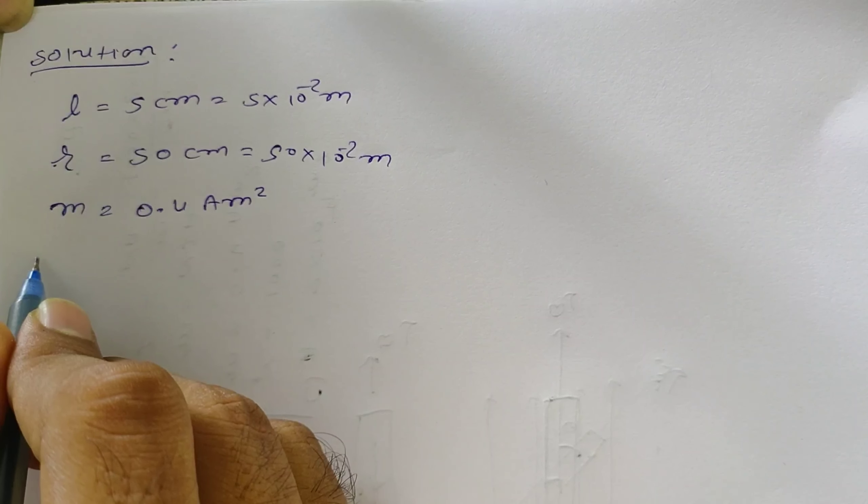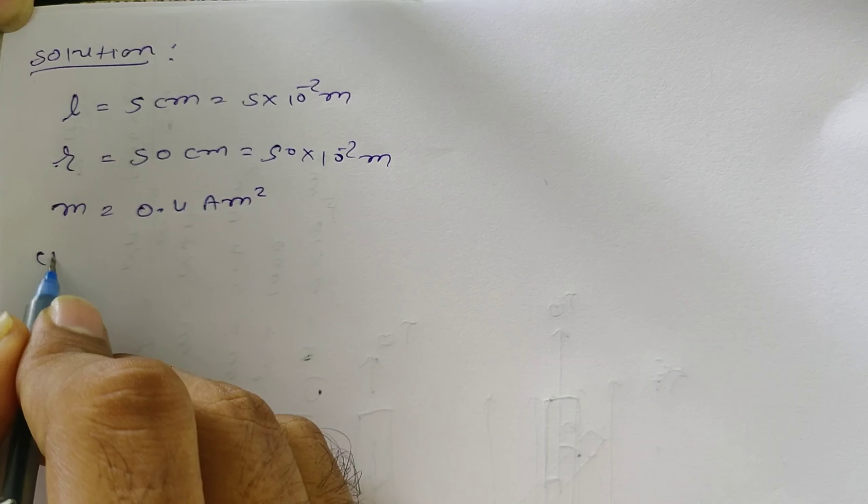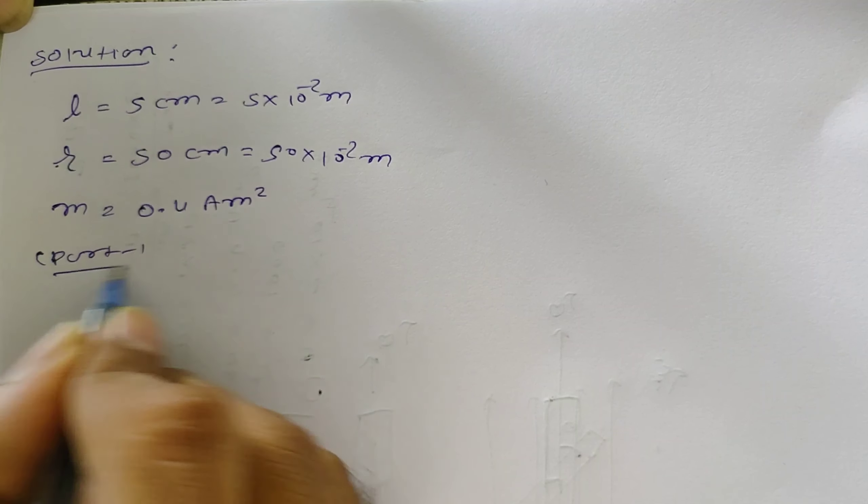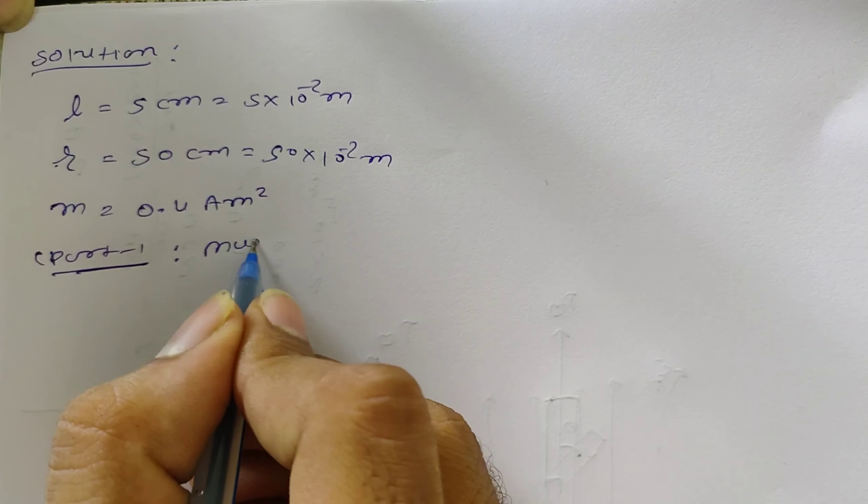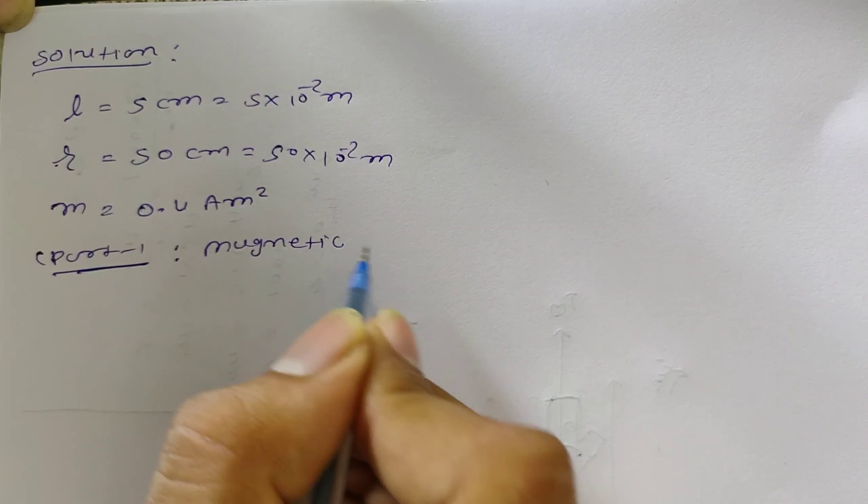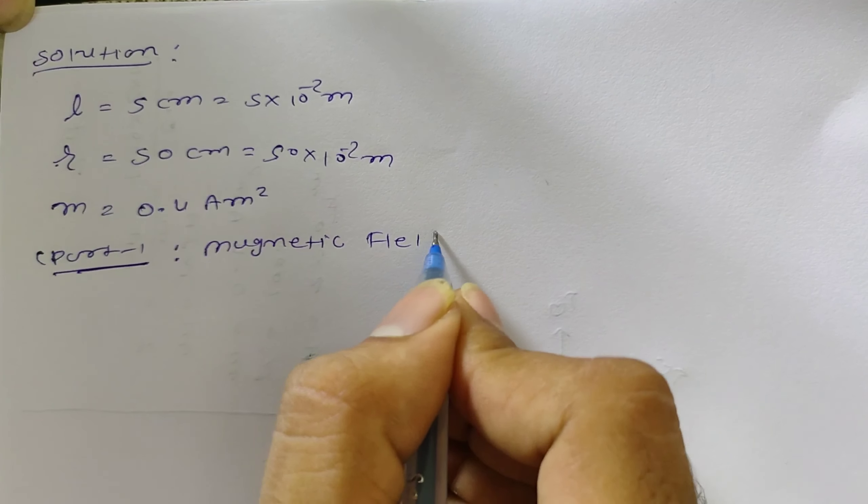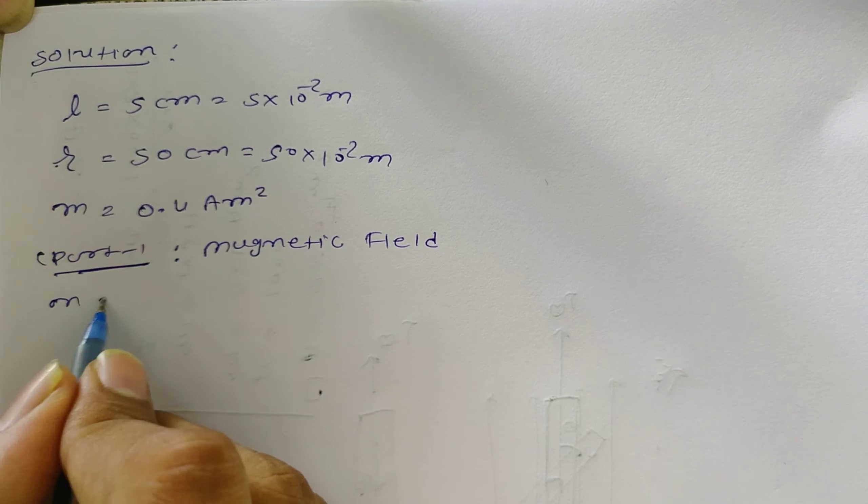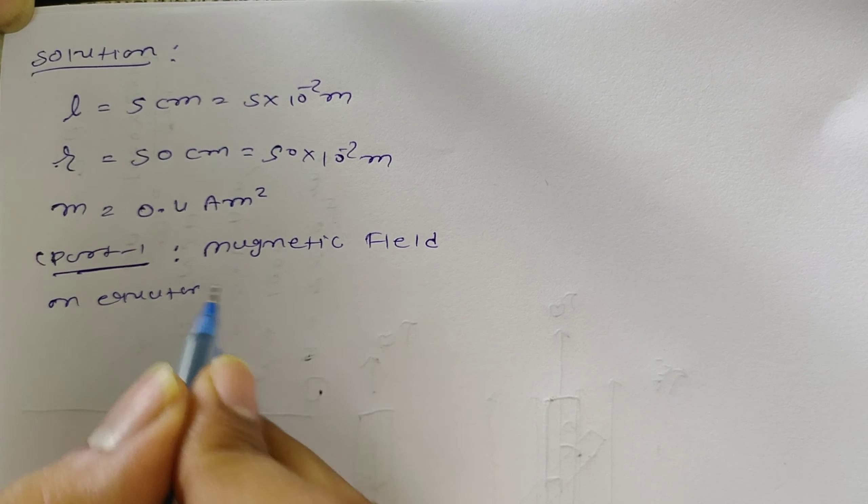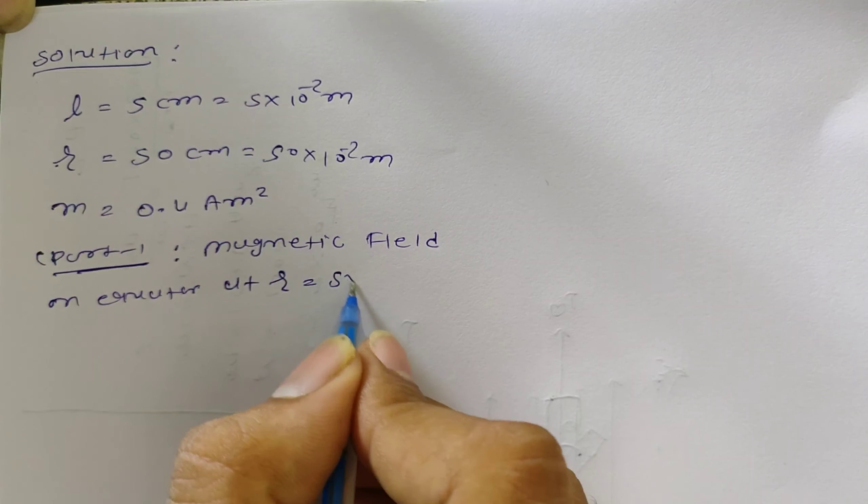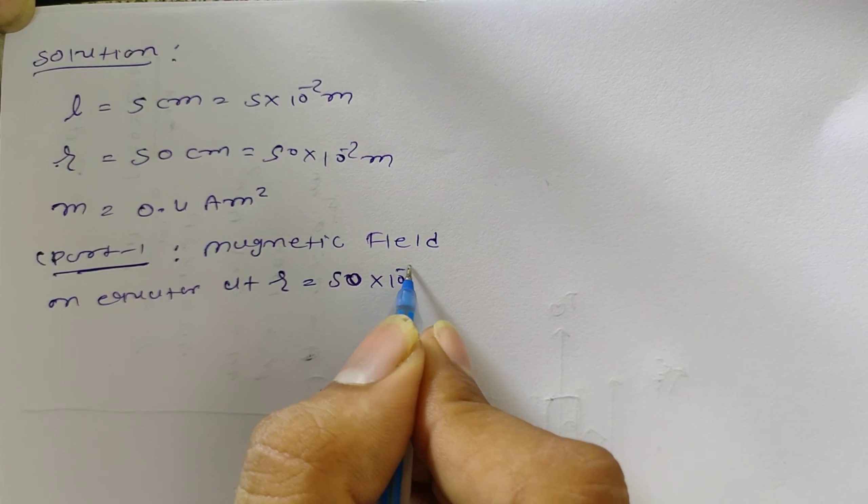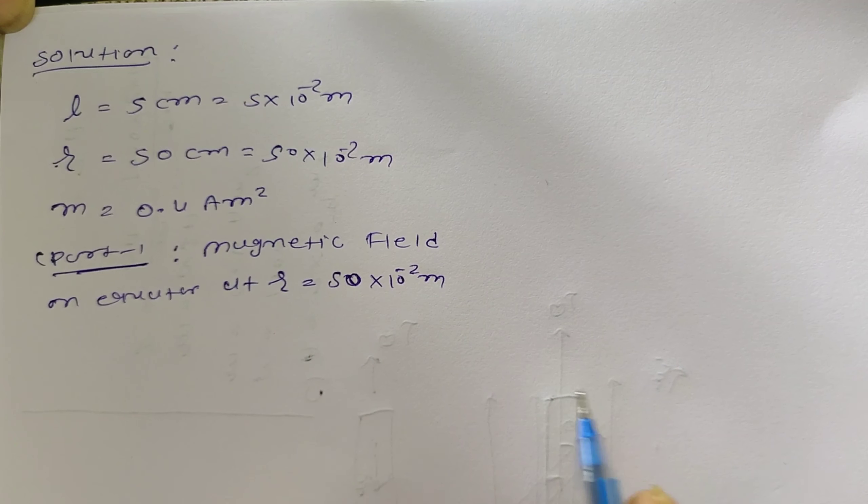In part 1, we have to find what? Magnetic field on equator of the magnet. Magnetic field on equator at R equal to 50×10⁻² m from the center of the magnet.